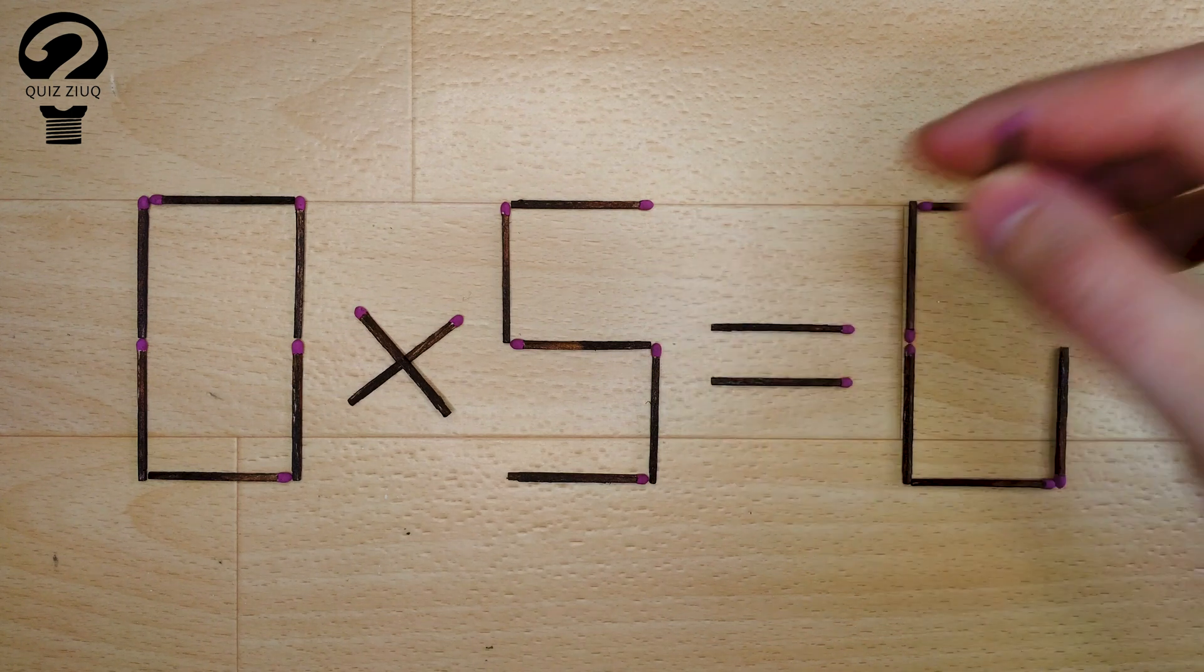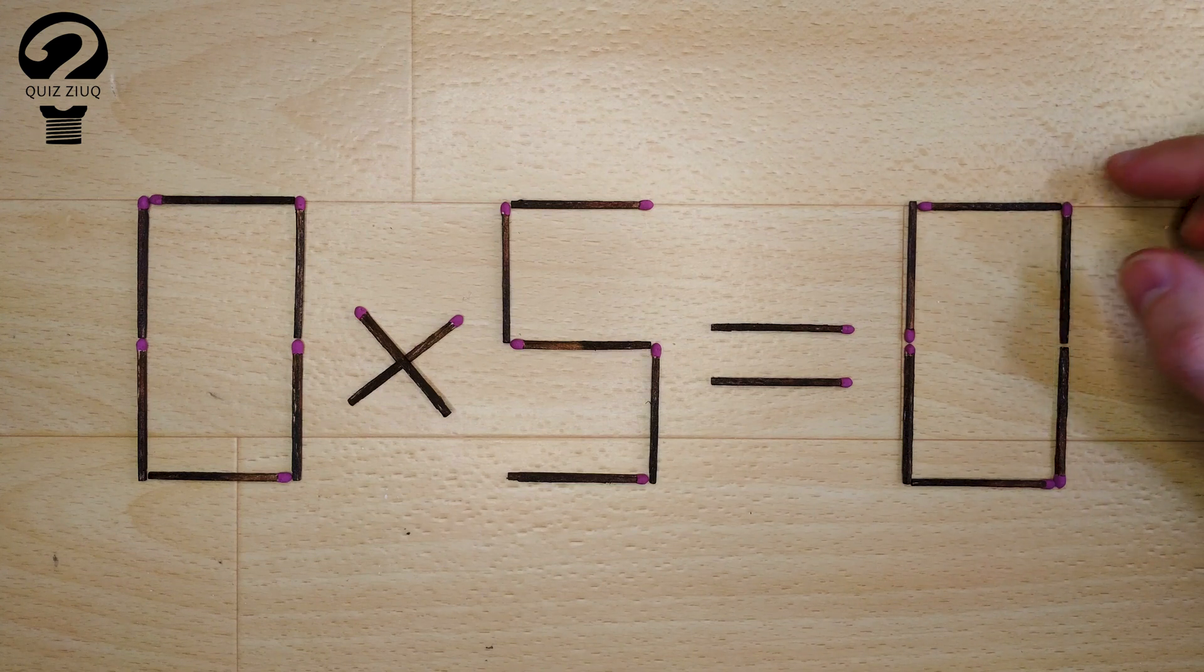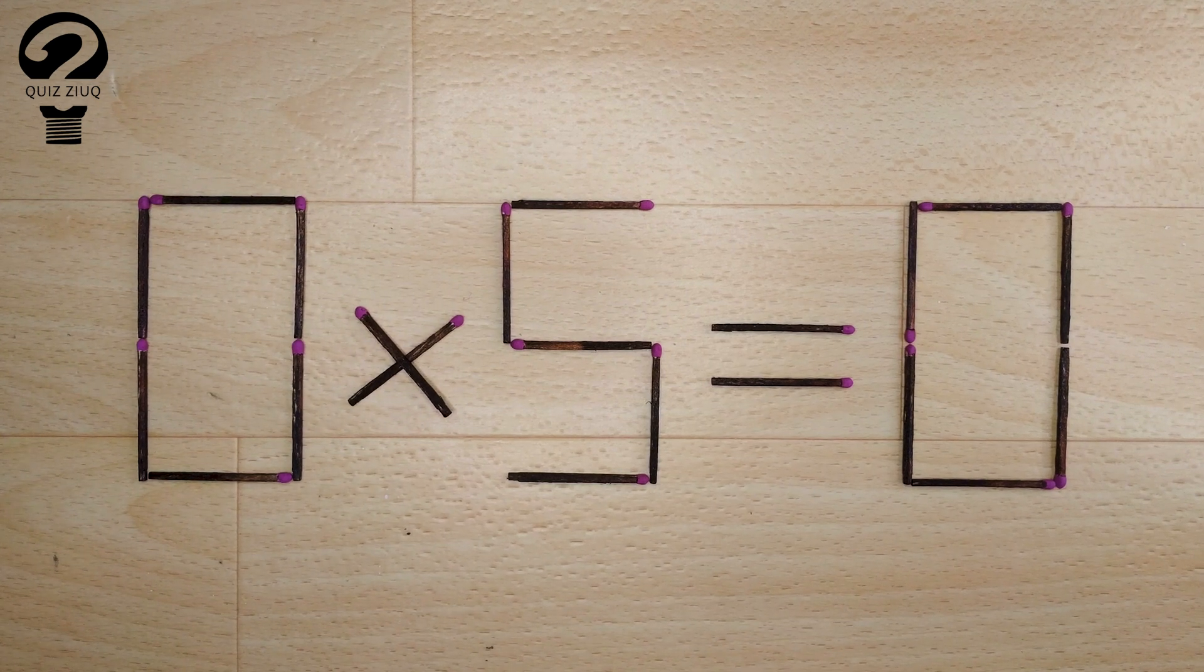And now, when we check, 0 times 5 equals 0. 0 equals 0. Our equation is correct. The puzzle is solved.